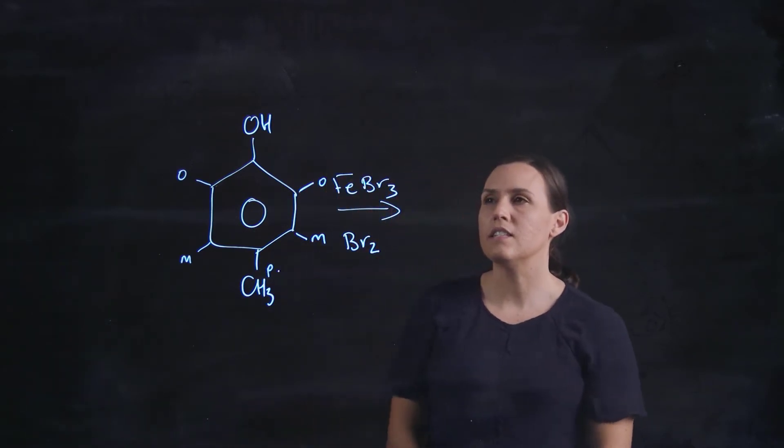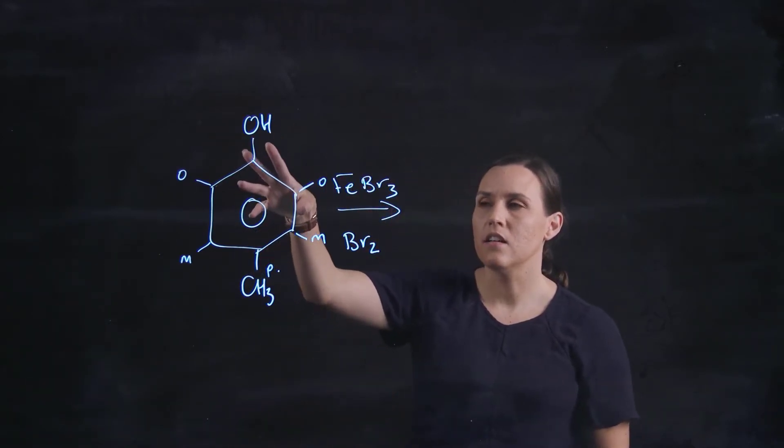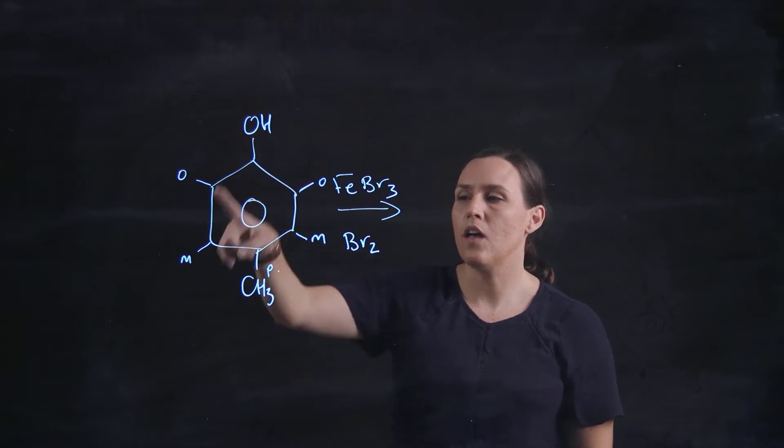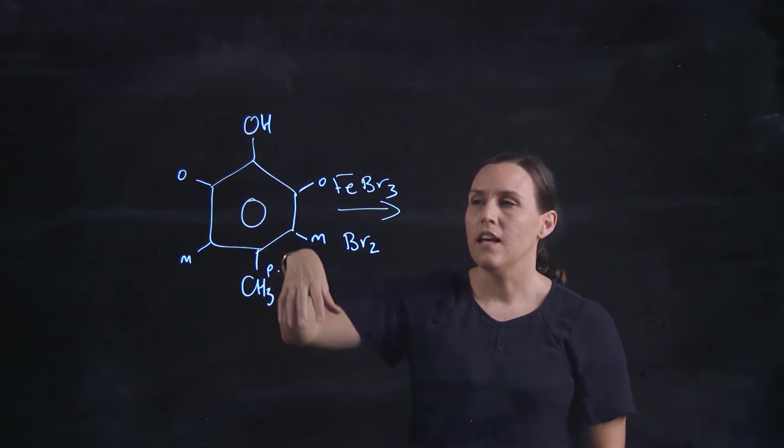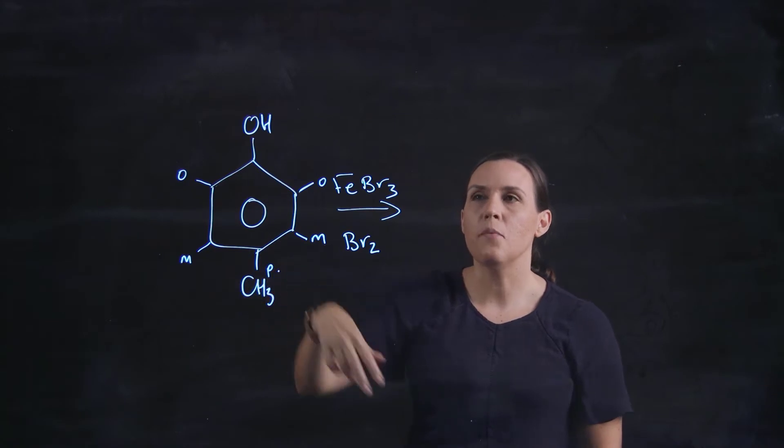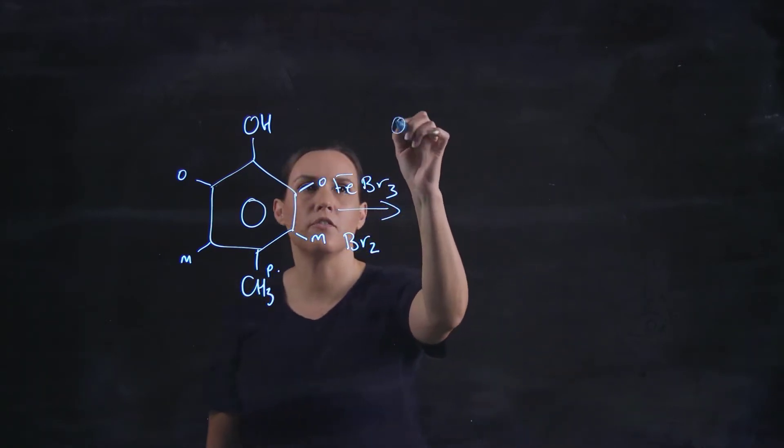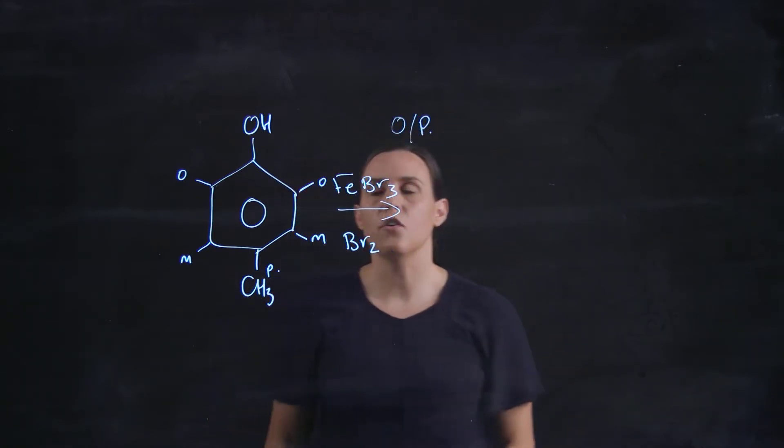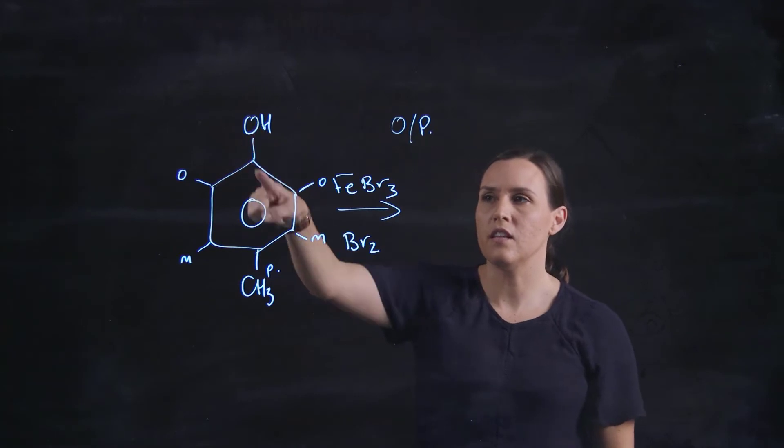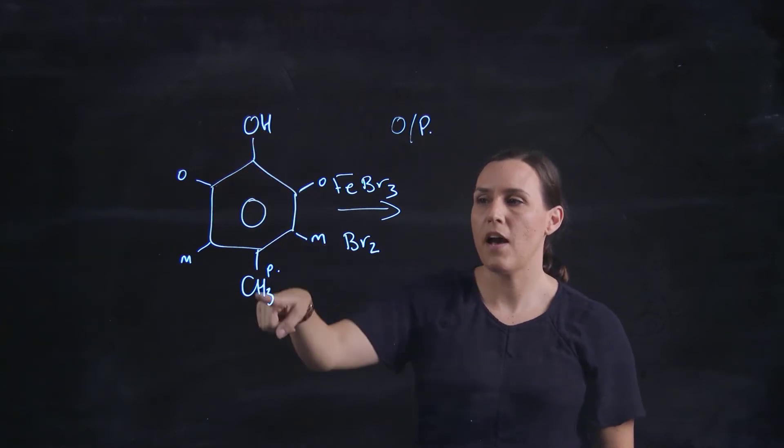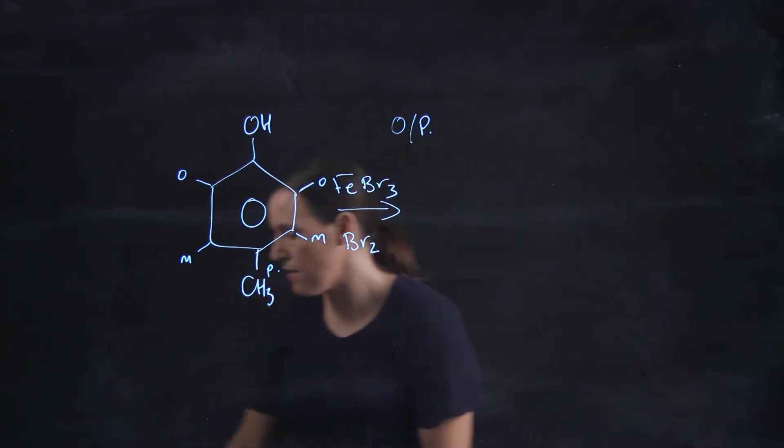So if we look at this particular compound we've got an alcohol and we've got a CH3. Now alcohol and CH3 are both ortho para directing. So the alcohol is going to direct in the ortho and the para position and the methyl is also going to direct in its ortho and para.